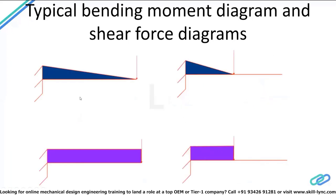The second case is a cantilever beam subjected to a single point load at the free end. In that case, the bending moment diagram is a linearly varying diagram, continuously increasing from zero at the free end to the maximum value near the support. The shear force is actually constant along the entire length of the cantilever, because the slope of the bending moment diagram is constant since it is a straight line, and slope represents the shear force.